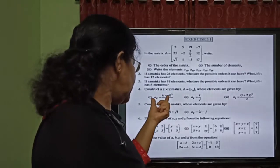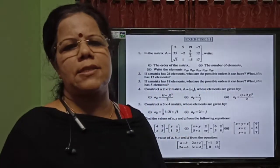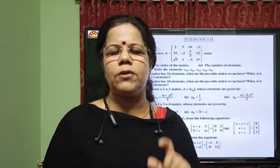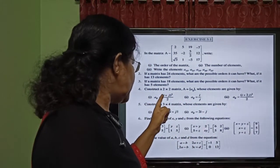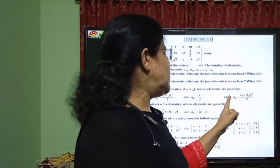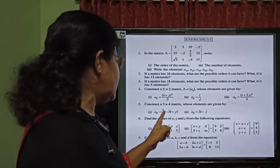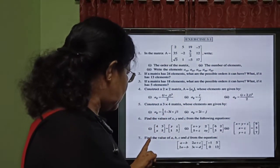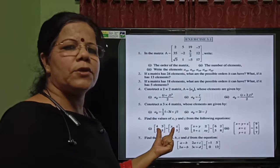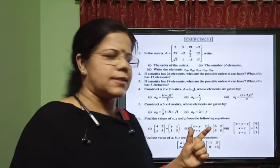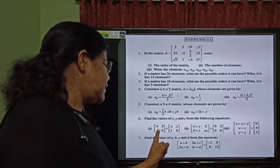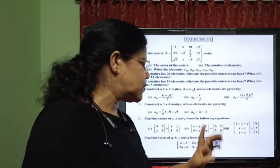In the fourth question, given A_ij, we construct a 2 by 2 matrix. A 2 by 2 matrix consists of 4 elements: A_11, A_12, A_21, A_22. We substitute the values of i and j to find each element. For question 6, we find the values of x, y, z by using equality of matrices — equating corresponding elements. Since the orders are equal, we get y equals 4, z equals 3, and x equals 1.